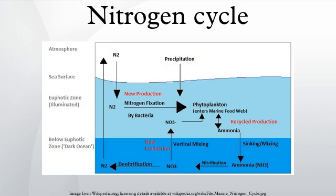Ammonium and nitrite show a maximum concentration at 50 meters depth, with decreasing concentration below that depth. This distribution can be accounted for by the fact that nitrite and ammonium are intermediate species — they are both rapidly produced and consumed through the water column. The amount of ammonium in the ocean is about three orders of magnitude less than nitrate. Between ammonium, nitrite, and nitrate, nitrite has the fastest turnover rate. It can be produced during nitrate assimilation, nitrification, and denitrification, but it is immediately consumed again.